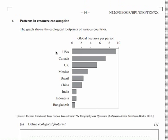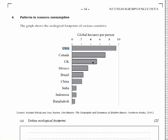So the question here starts off by talking about ecological footprints. There's a diagram which looks at the ecological footprint, measured in global hectares per person. USA, not surprisingly, is up at the top at 9.75 global hectares per person. Then Canada, UK, Mexico, Brazil, China, India, Indonesia, Bangladesh. Look at those differences, guys — Bangladesh is less than one compared to 9.7 for the United States of America.